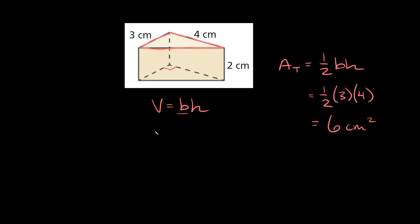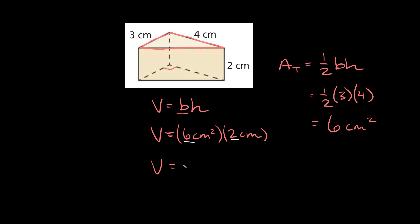Let's plug that into our formula. So we're going to get that the volume is equal to the base, or again just the area of a face, which we found to be 6 centimeters squared, and then we're going to multiply that by the height which is 2 centimeters. So the volume is going to be equal to 6 times 2, that's equal to 12, and our units are going to be centimeters cubed. That makes sense because we have centimeters squared times centimeters, and 2 plus 1 is equal to 3.